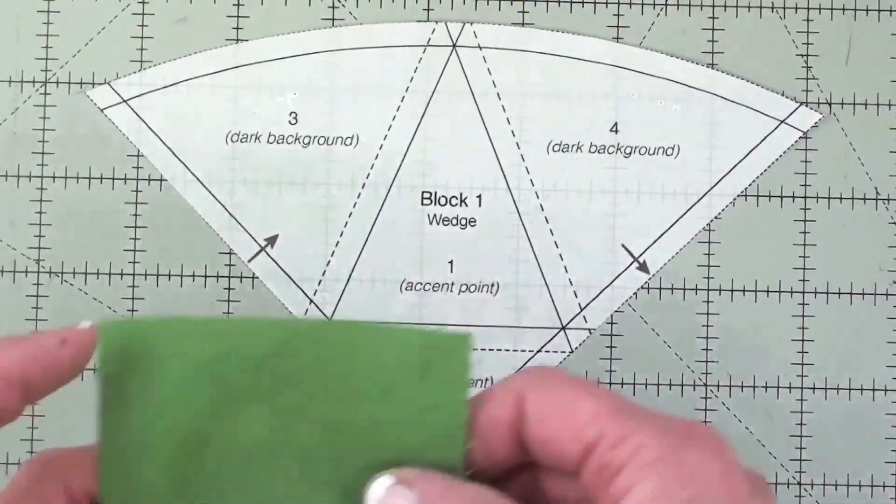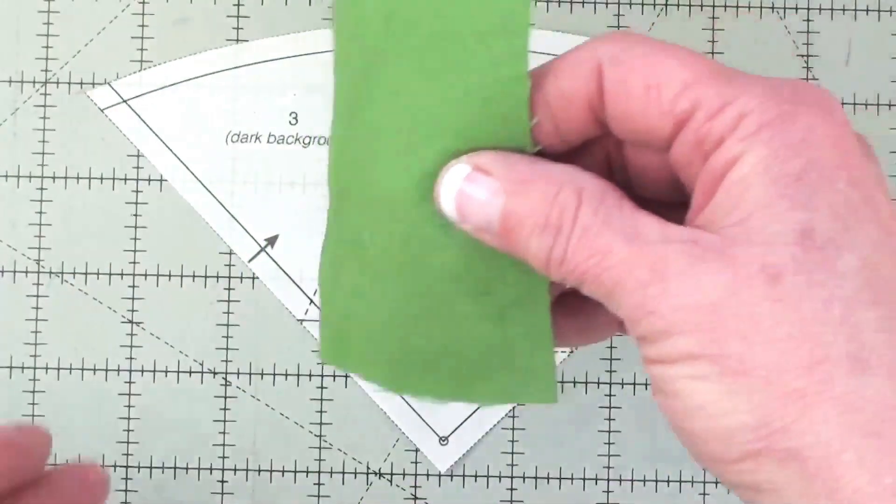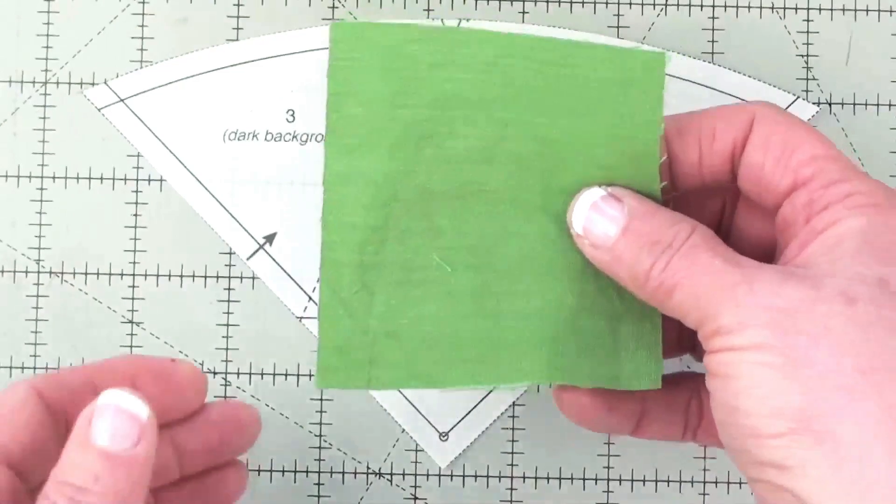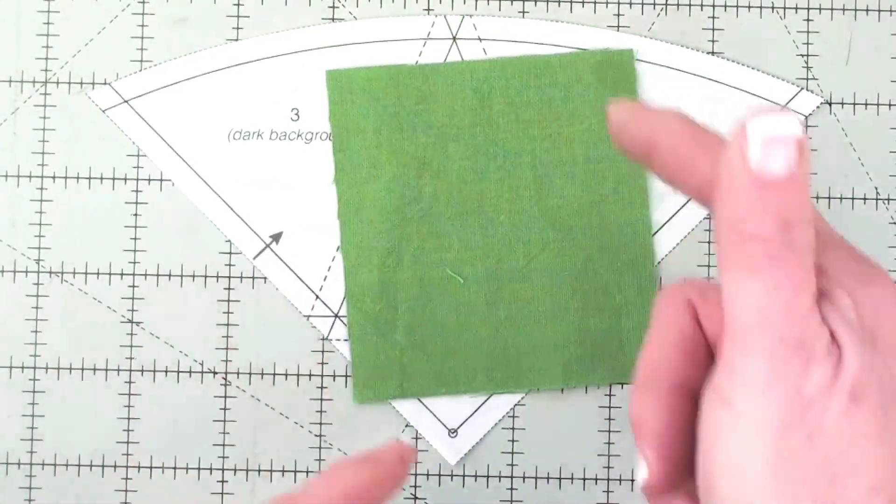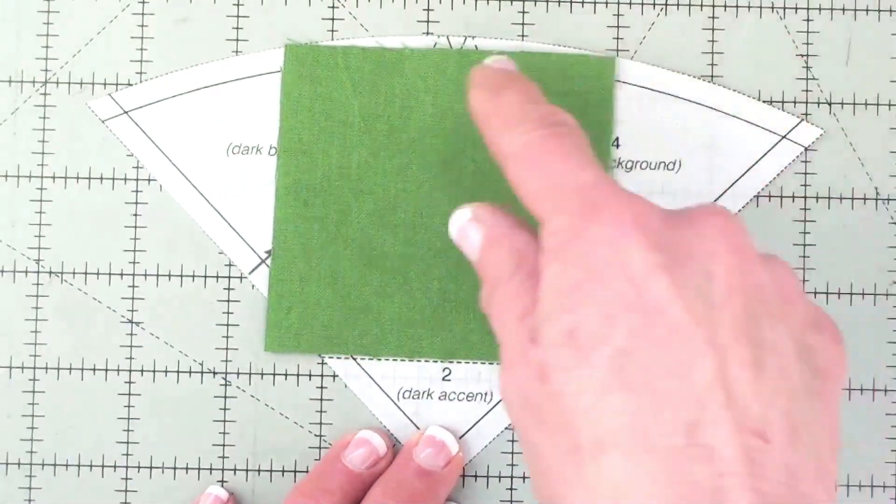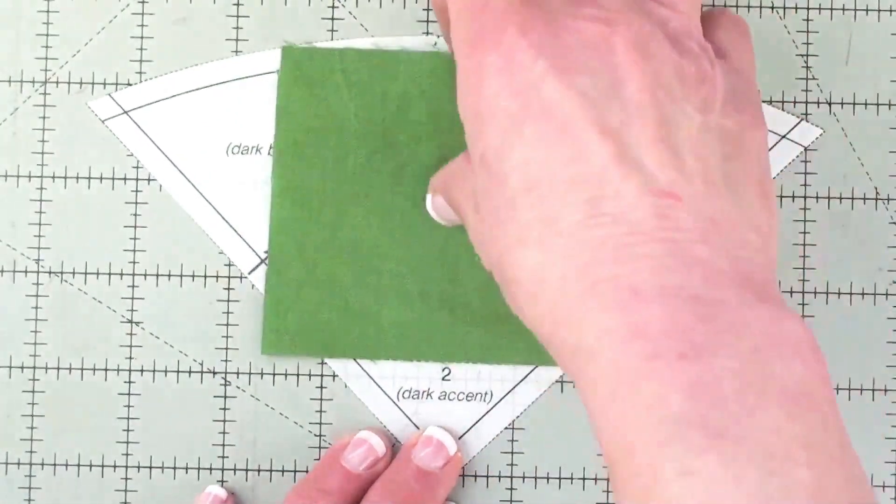The first thing you want to do is orient this number one shape correctly because it is narrower than it is tall and you sure don't want to turn it sideways or it won't cover the whole shape.